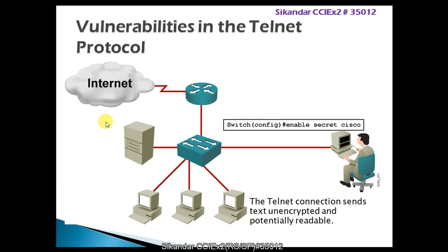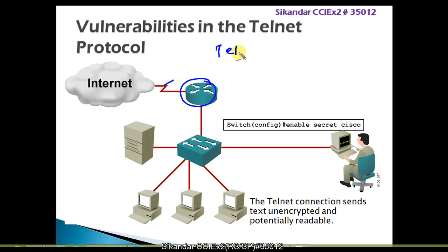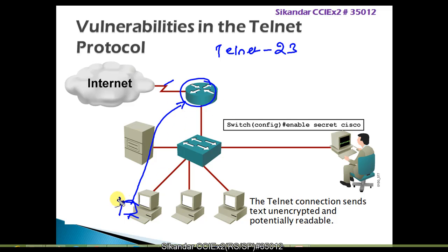In this section we are going to discuss a specific topic called SSH. There are two types of ways you can access a network device. Telnet is a protocol built into TCP/IP which works on port number 23. By sitting on any computer in the LAN or WAN, you can access a remote device by typing telnet followed by the IP address, for example 192.168.1.100.